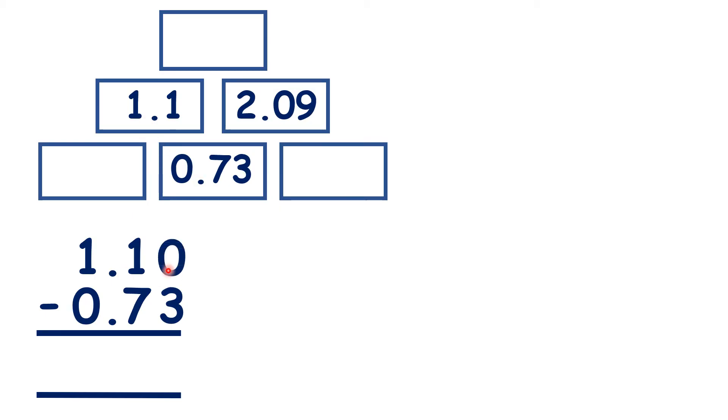We can write a 0 in our empty place value column. We need to remember the decimal point in our answer. Then we can subtract as normal to get the value of our missing brick. So that's 0.37.